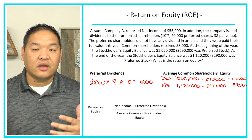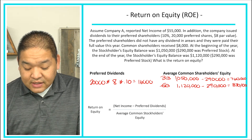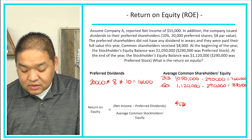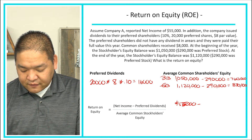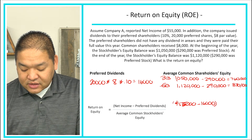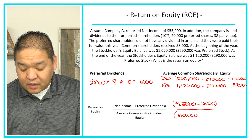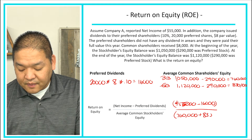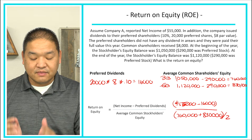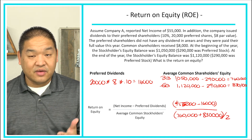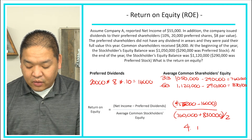We'll plug these directly into the equation. The numerator is net income of $55,000 minus preferred dividends of $16,000. The denominator is the average common equity: ($760,000 plus $830,000) divided by two. Calculating through: $55,000 minus $16,000 equals $39,000, divided by the average of $795,000, gives us approximately 4.91 percent, or 0.0491.